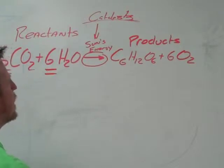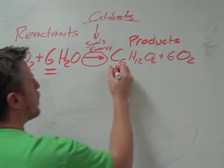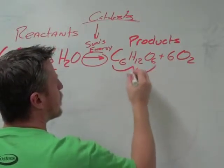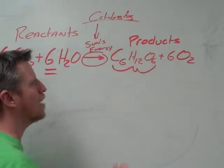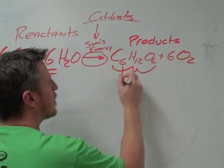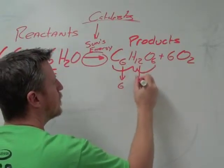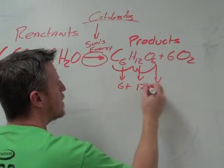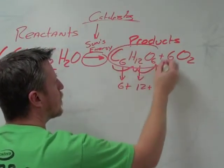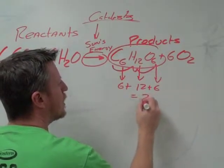Okay. So some other things we can look at is how we can count the molecules. Well, this particular atom or molecule, if we want to count the total number of atoms that make it up, we simply just take the six, add it to the 12, add it to the six. So we add these together, and one molecule of glucose is going to have 24 atoms.